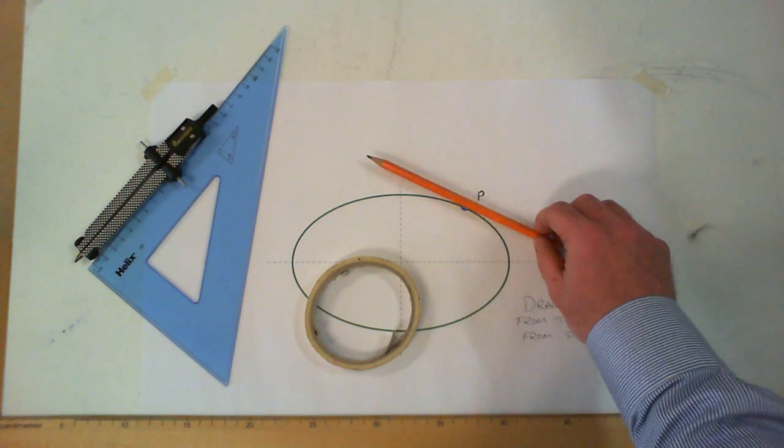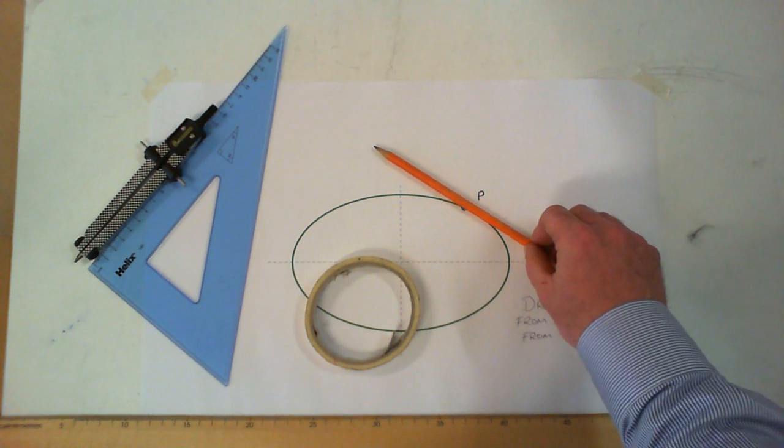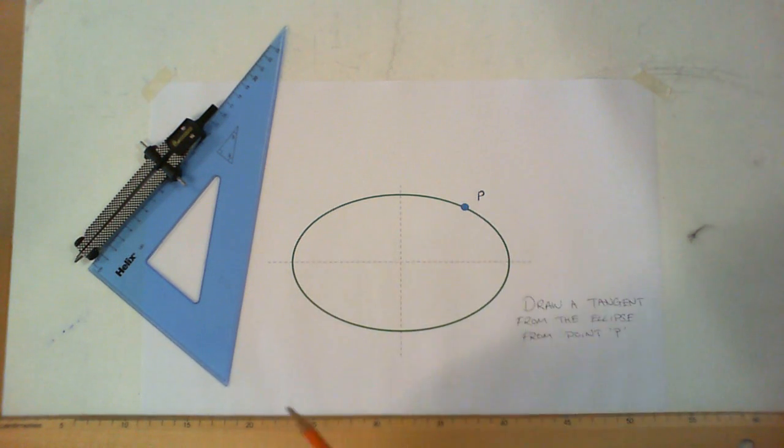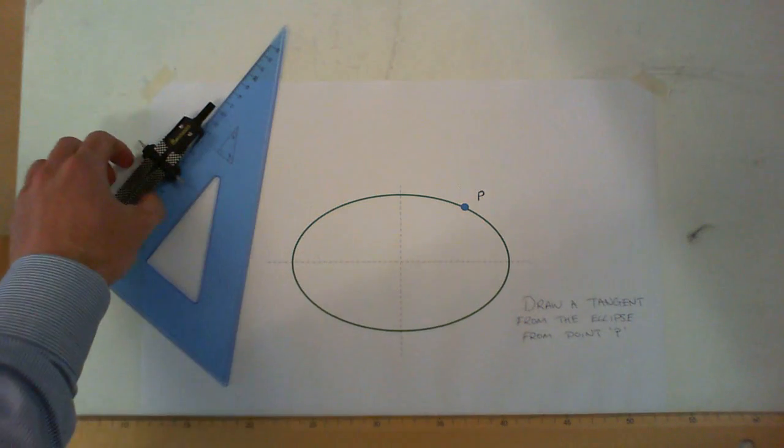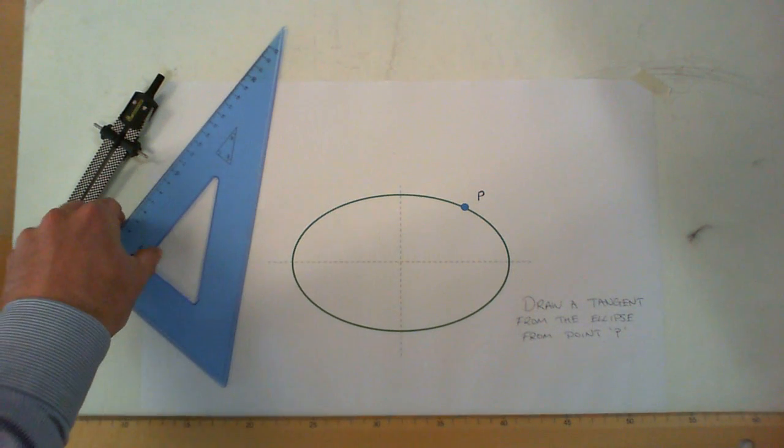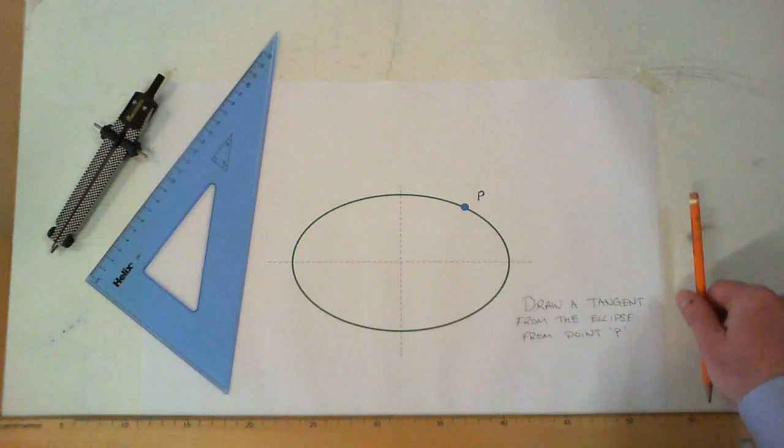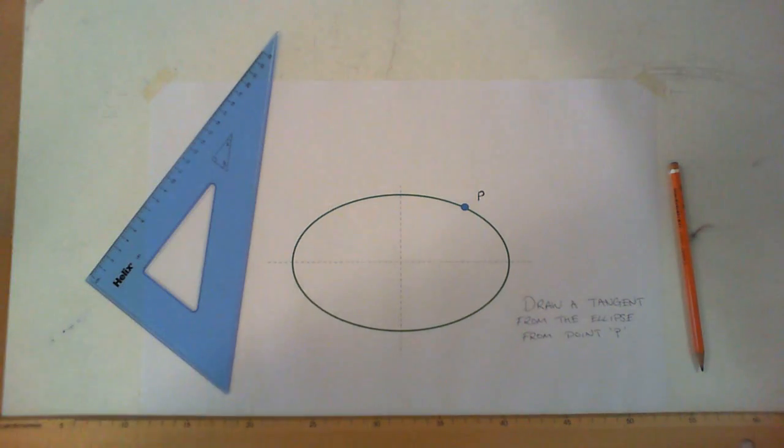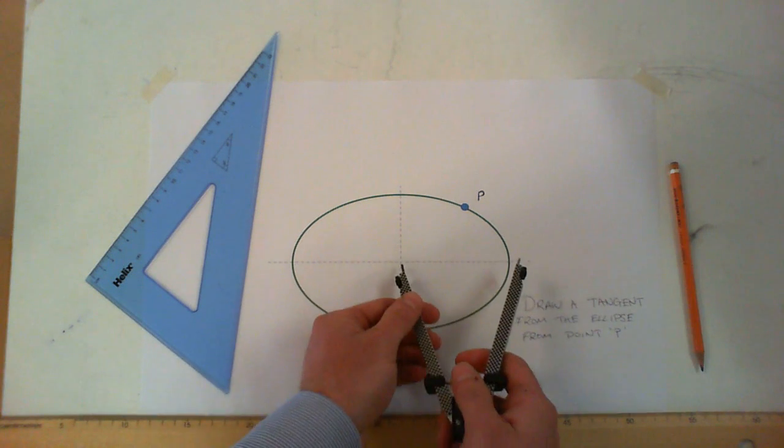The particular point of contact in this case is point P, so what we have to figure out is what angle that line would be going at. If in an exam you were just to guess it or eye it up, you won't receive any marks—there is a method to it. The first thing you need to do is find your focal points.